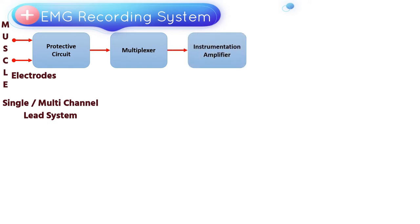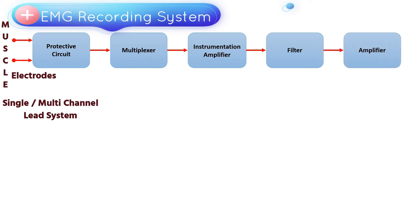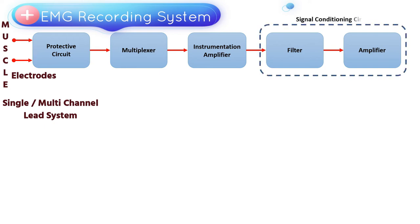Instrumentation amplifier. It is a three-stage differential amplifier used to amplify even a very weak signal. Noise is filtered using a filter circuit, and then the signal-to-noise ratio can be improved with the help of an amplifier circuit. These two circuits are often used together and are referred to as signal conditioning circuits.